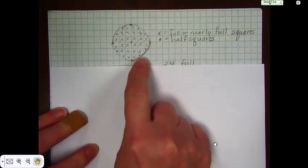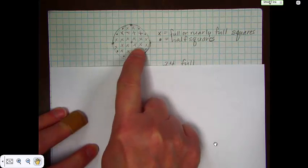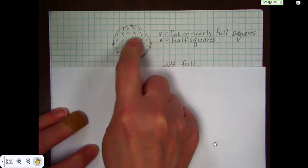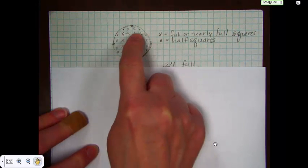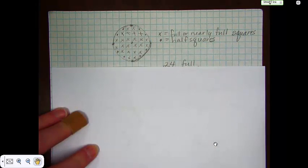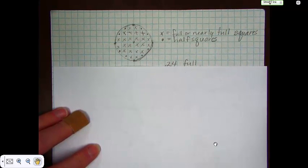1, 2, 3, 4, 5, 6, 7, 8, 9, 10, 11, 12, 13, 14, 15, 16, 17, 18, 19, 20, 21, 22, 23, 24. There are 24 full or nearly full squares.